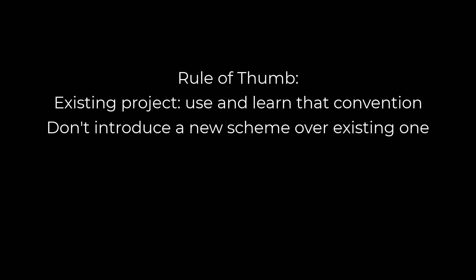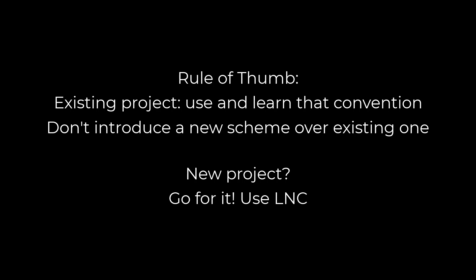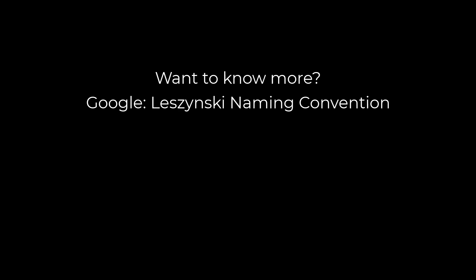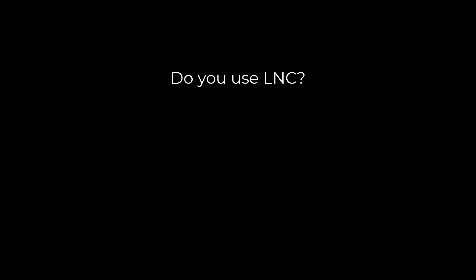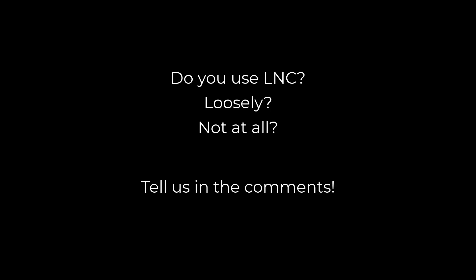However, if you are starting a new Access project and are looking for a solid naming scheme, go for it and use the LNC. Now, if you'd like to see some examples and find out more about LNC, it's very easy — just Google 'Leszinski naming convention' or 'Microsoft Access LNC' and you'll find lots of examples. One of the best is on Wikipedia, where they have a wide range of object prefixes that you can try to use, and that will help to make your code much more understandable and easy to read. Are you using LNC already, or are you using some other naming scheme in your project? Let me know in the comments section below.